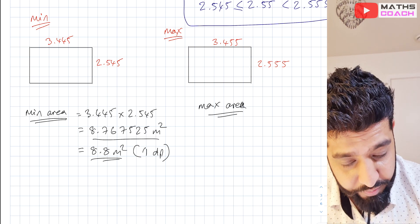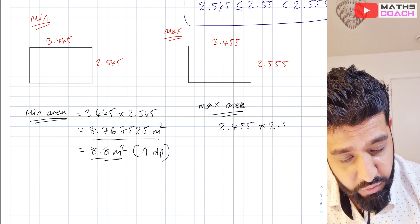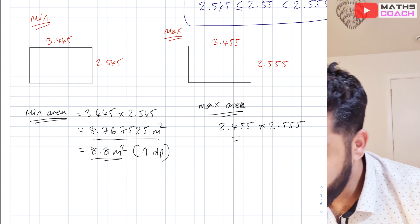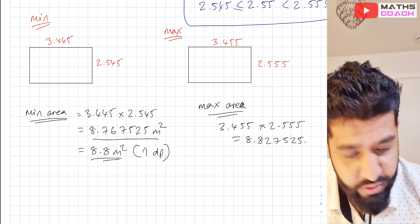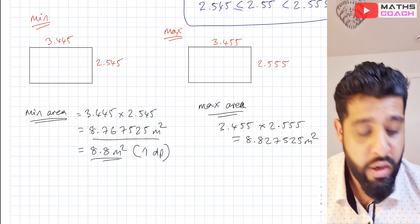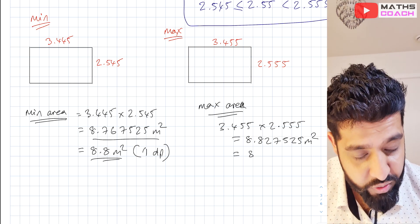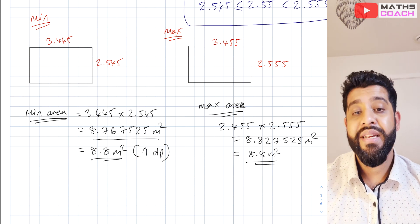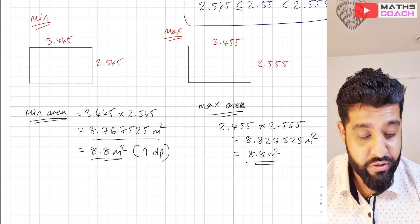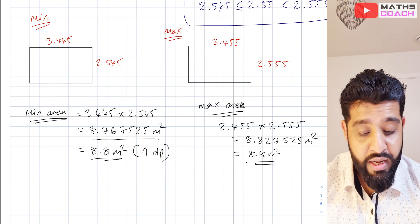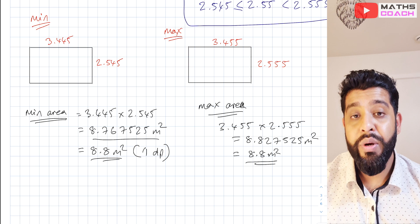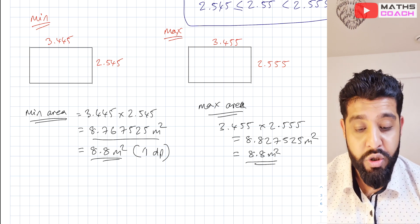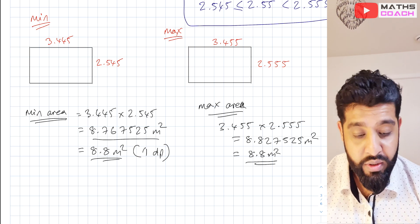For the maximum area, we have 3.455 times 2.555, which gives us 8.827525 square metres. We can round that to one decimal place as well, which also gives us 8.8 square metres. Often, an examiner will ask you to compare both maximum and minimum values and come to an appropriate degree of accuracy. We noticed that both values round to 8.8 to one decimal place, so offering 8.8 square metres as the overall answer is a good rounding to do.